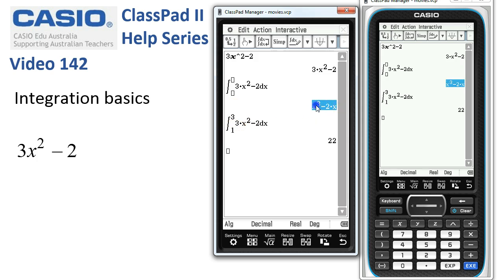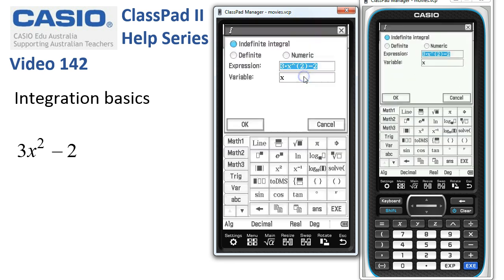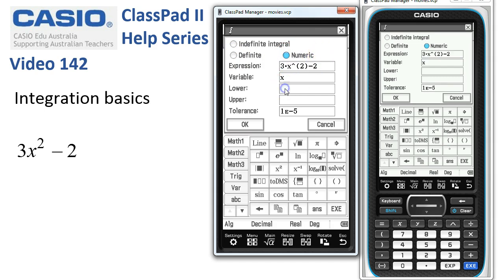Now we'll do it with this. Let's take our original function again here and do it the same way. Interactive, calculate, integral. And that's the third option. As well as definite, there's a numeric option where ClassPad will use numerical methods to evaluate the integral.